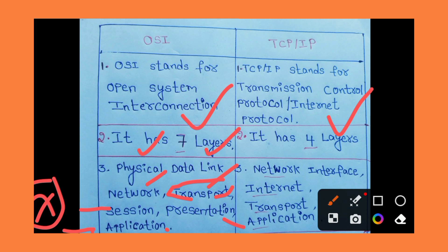The Application Layer is the seventh layer. It is the user interaction layer. Applications include apps on a mobile phone — for example, WhatsApp, Facebook, and Google or a browser. These are all applications.